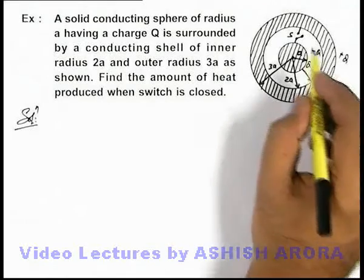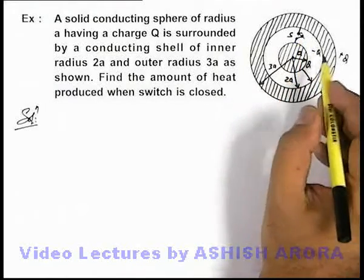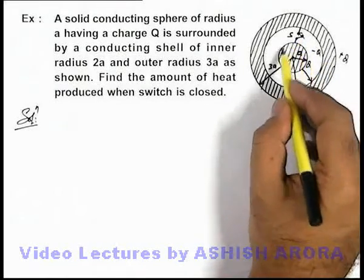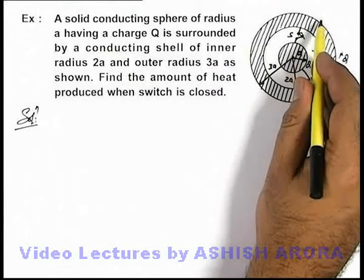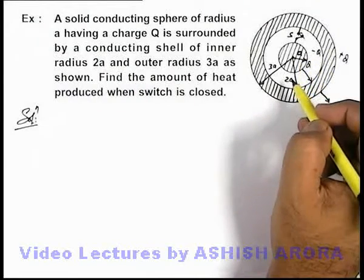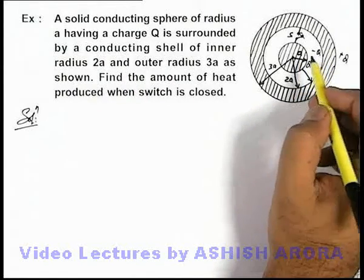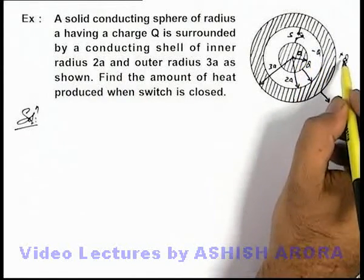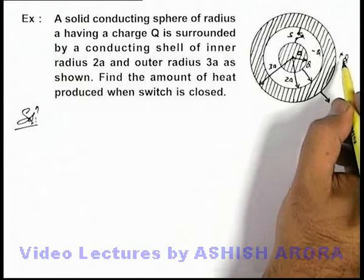Now if we close the switch, we know that the whole charge of the inner sphere will flow to the outer surface of the outer shell to keep the potential of the two equal. When the whole charge flows to the outer surface, we can directly state: